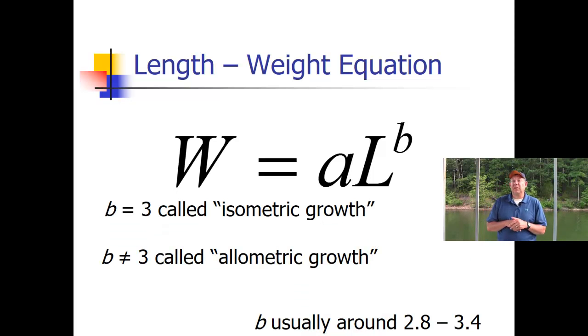If b equals three, we say that fish grow in three dimensions. Roughly you can say that they put on weight at the cube of their length, which is why longer fish put on weight much faster. Very rarely does it equal exactly three. If it's three, it's called isometric growth. If it doesn't equal three, it's called allometric growth. Usually in fish it's about 2.8 to 3.4, but it can vary.